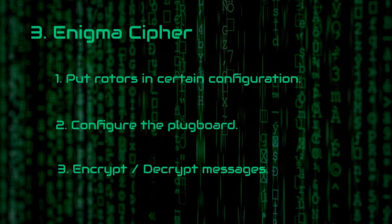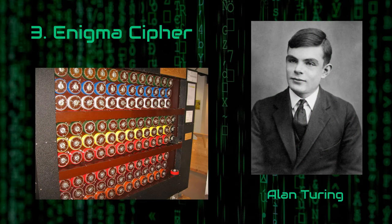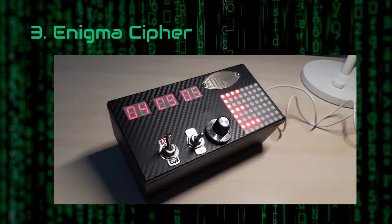Even if you type the same letter multiple times, the outcome will be different, and that is the beauty of Enigma — because you essentially alter the electrical path in every single iteration. Obviously, this is an oversimplified explanation, but you get the idea. The cool part about Enigma is its effectiveness, which was proven in the Second World War until it was cracked by the genius named Alan Turing, who we can say is the founding father of modern computer science. For that reason, I am highly amazed and interested in the Enigma machine — so much so that I have created my own simplified version using an STM32 chip, which you can find up here.